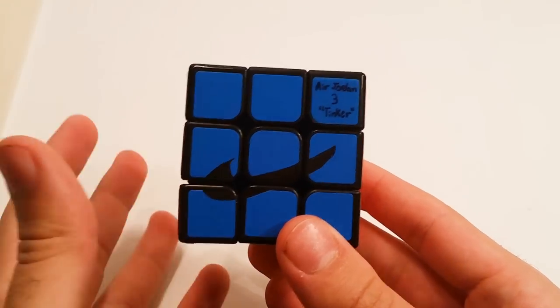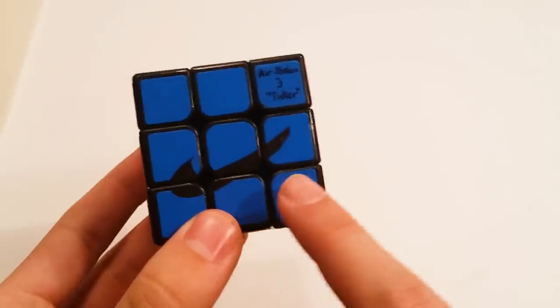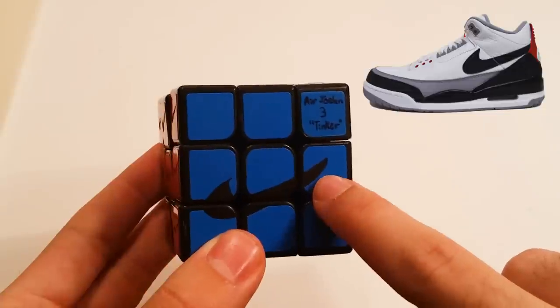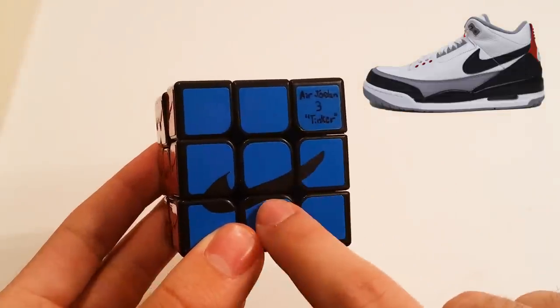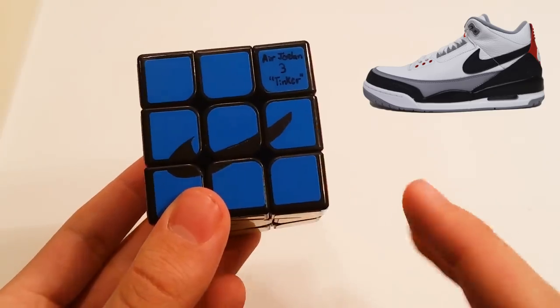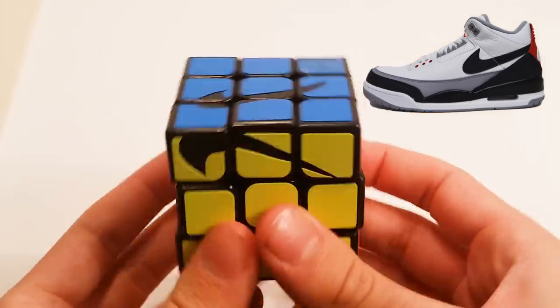And then, moving over to the different types of swooshes, here we have a weird-looking swoosh, because this belongs on a shoe, actually. It's from the Air Jordan 3 Tinker. And right over here, the swoosh is sort of cut off by a different pattern on the shoe. And I really love the way the shoe looks, so I decided to add it to one of the sides of the Nike swoosh cube.